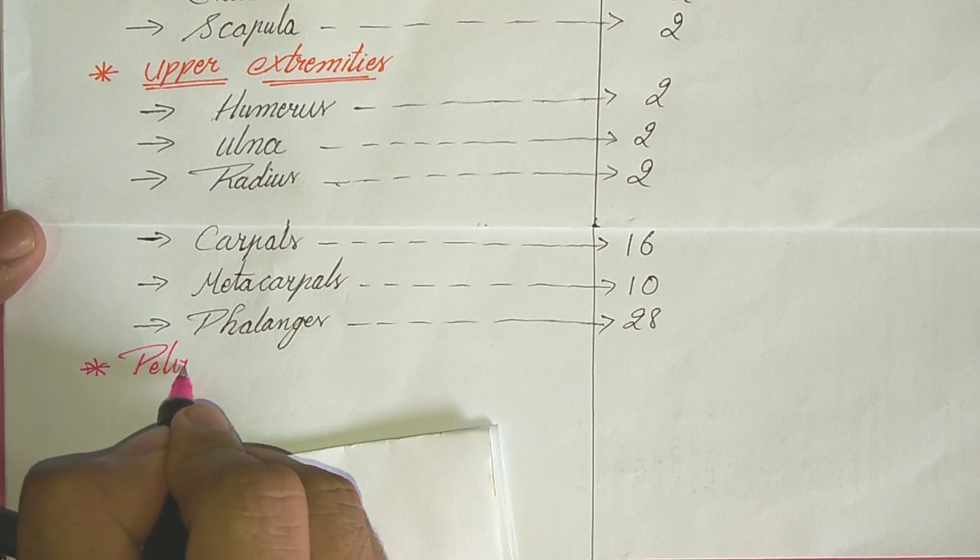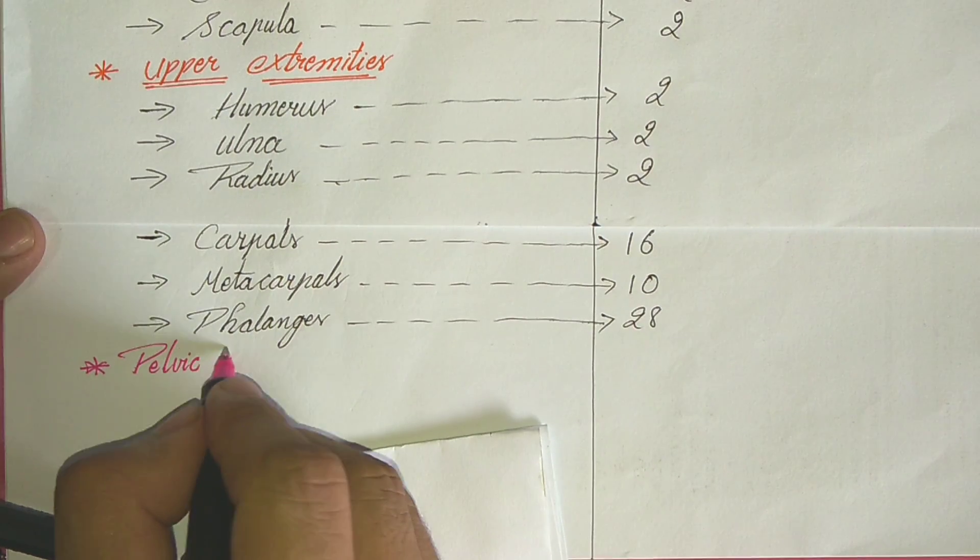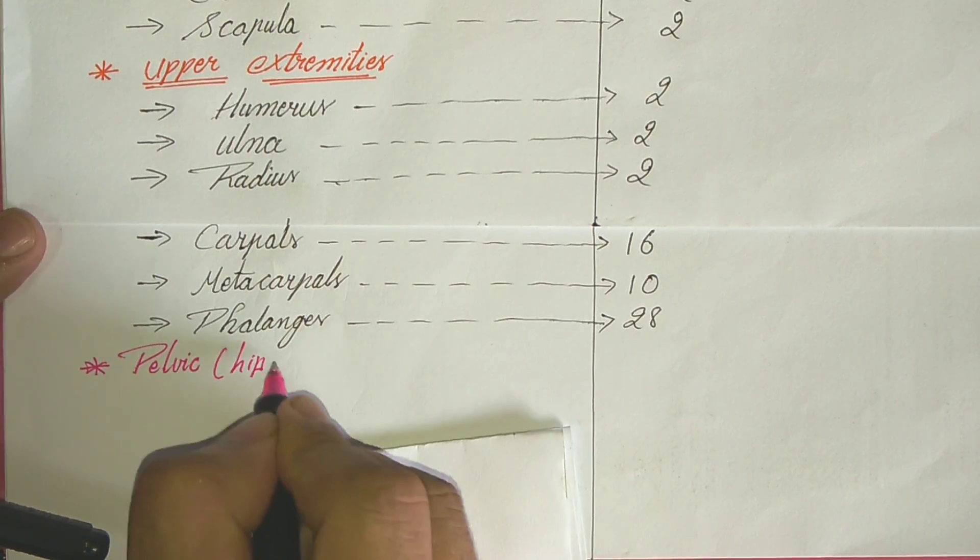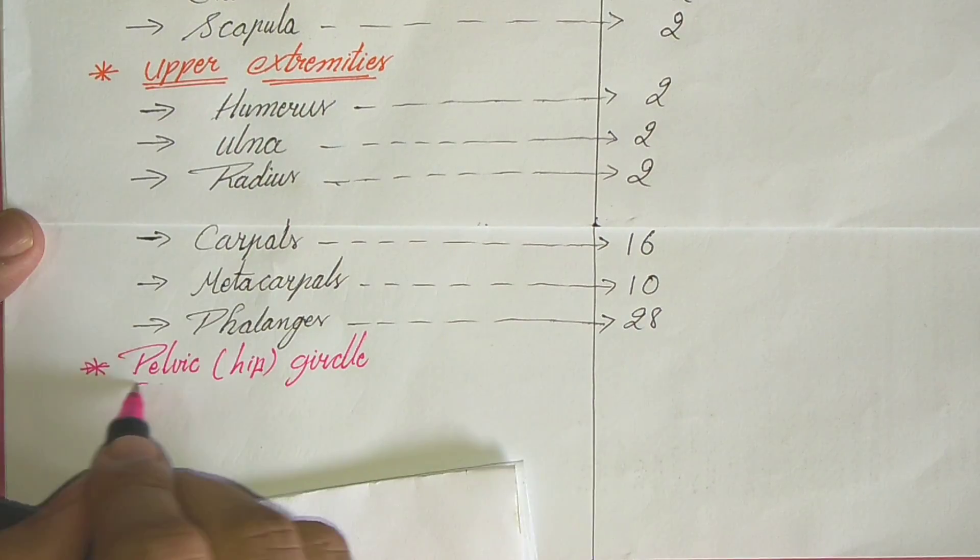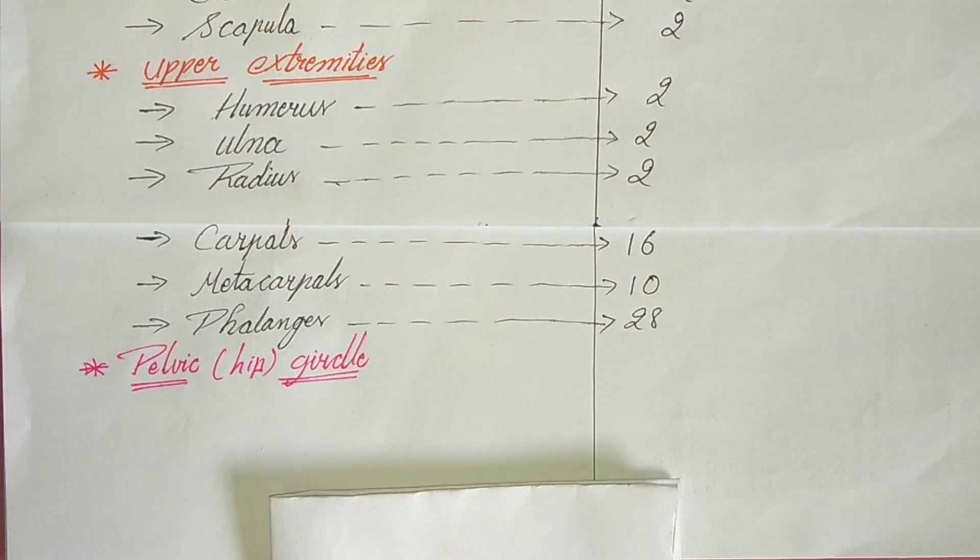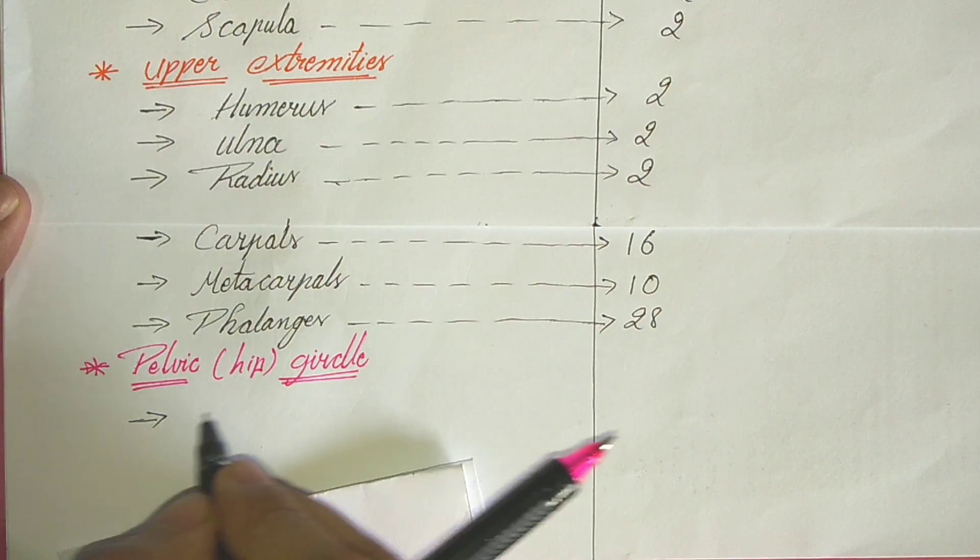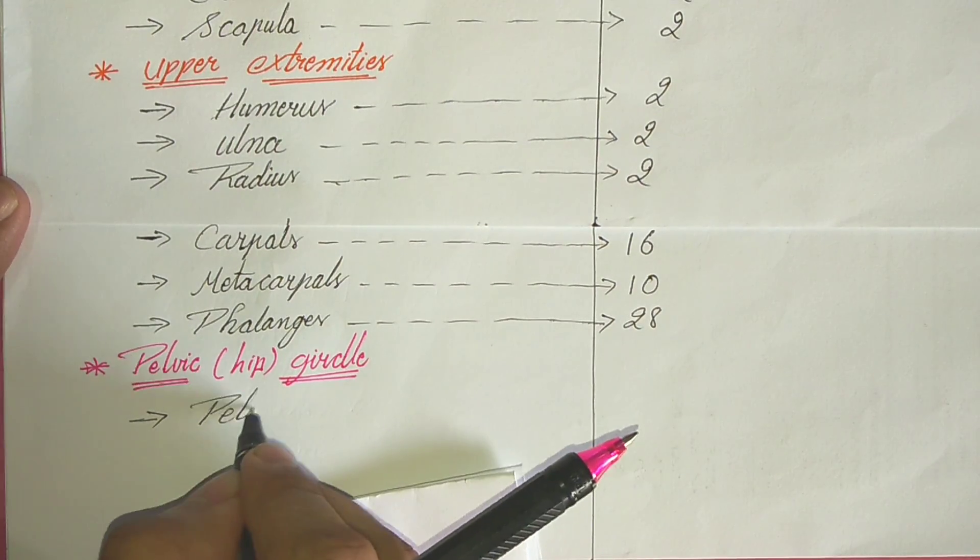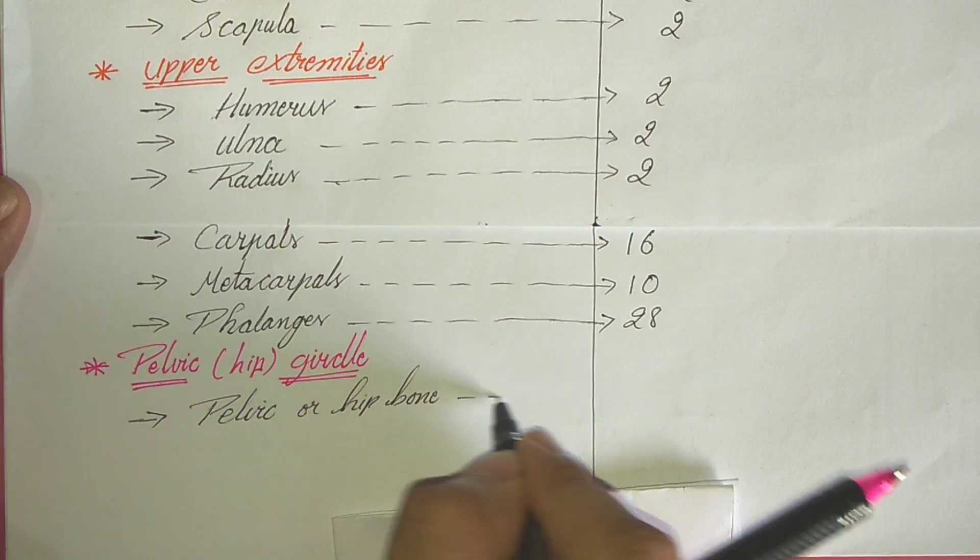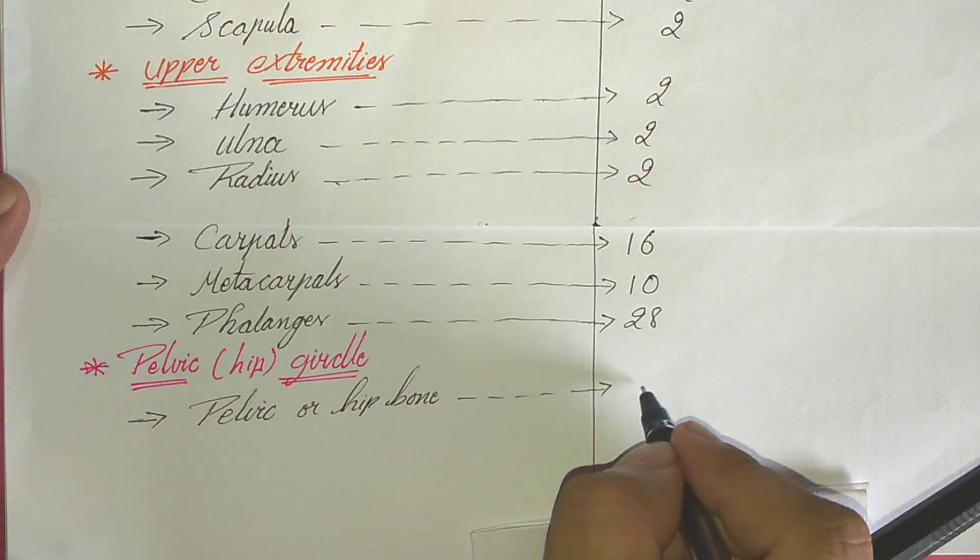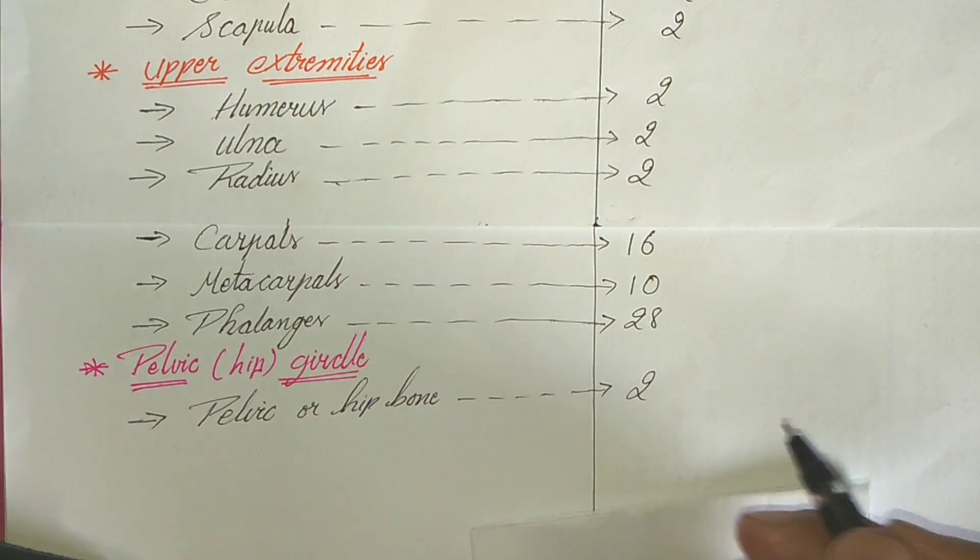Now come to the pelvic region. Pelvic is also known in common language as hip. So pelvic girdle, only one bone is present. That is pelvic or hip bone, which is two in number, one bone on each side.